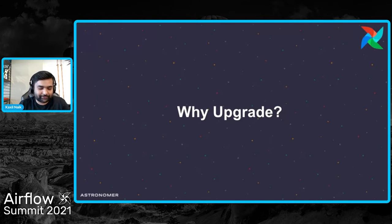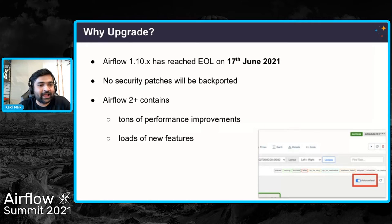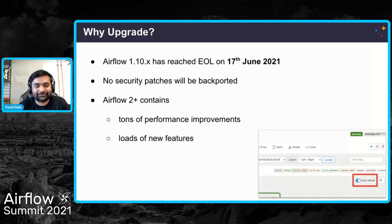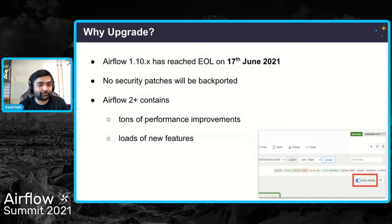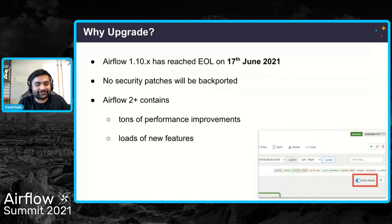Most of you might have questions about why we should upgrade to 2.0 and above. Airflow 1.10.x has reached end of its life on 17 June — last month. That's a good enough reason for upgrading. When I say end of life, it means no new releases for the 1.10.x series would be cut, even for security fixes. And of course, the awesome new features and performance improvements for Airflow 2.0 and 2.1 — the auto refresh feature, and more than 100x performance improvements for the scheduler.